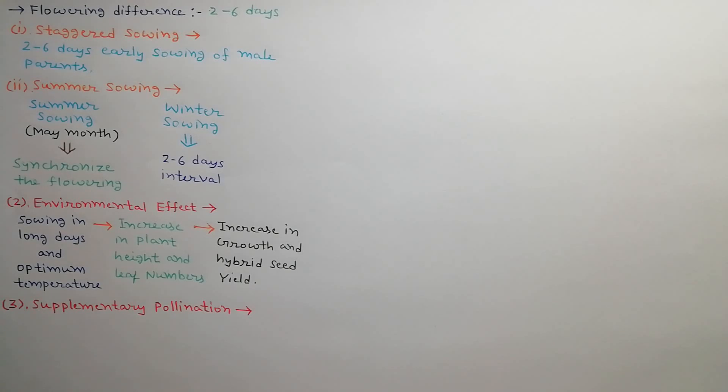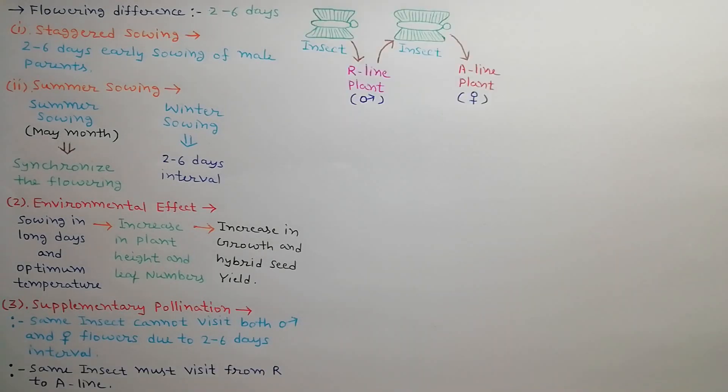Third is supplementary pollination. Due to 2 to 6 days interval, insects can visit only one parent which reduces the pollination percent and also reduces hybrid seed yield. Same insect must visit from R-line to A-line plant to increase the hybrid seed yield as shown in the diagram.